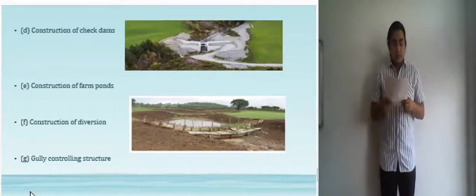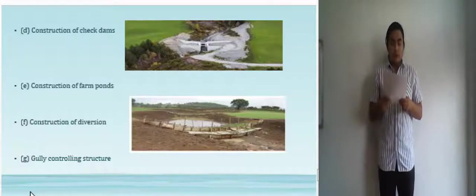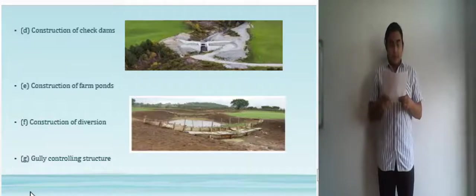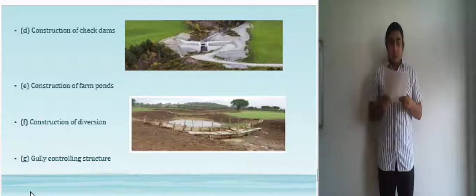The next is construction of farm ponds. The next one is construction of diversion. And the last one is gully controlling structure. A structure installed across an active gully to stabilize the gully through control of erosion of gully bottom and sides is called gully control structure. The gully control structure is primarily designed for safe disposal of excess runoff generated from the watershed.